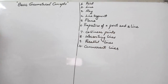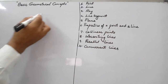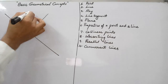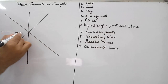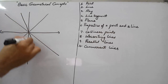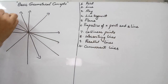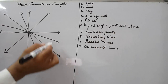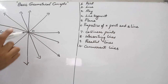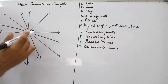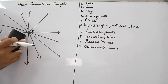Next is concurrent lines. When two lines cut at one point they are called intersecting lines. But if three or more than three lines are passing through a single point, then these lines are called concurrent lines. This point where they meet is called the point of concurrence.